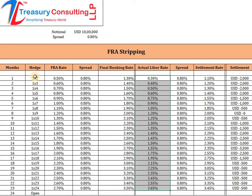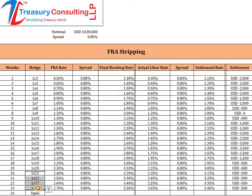To clarify the notation: 1 into 3 means one month from now for two months; 1 into 4 means one month from now for three months; and this continues — 1 into 24 means one month from now for twenty-three months. The actual LIBOR rate stands at the time of maturity.